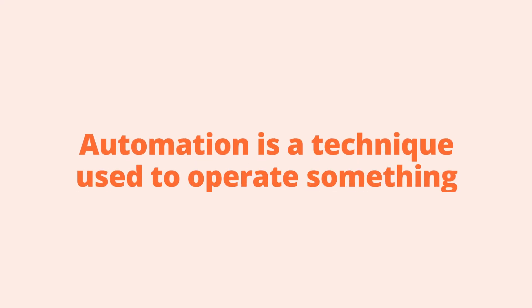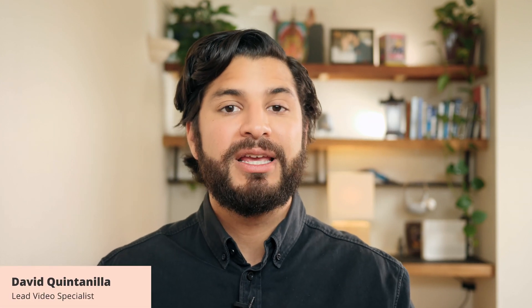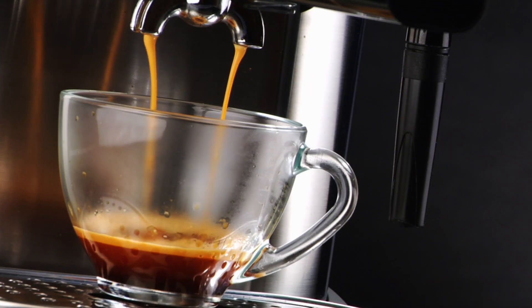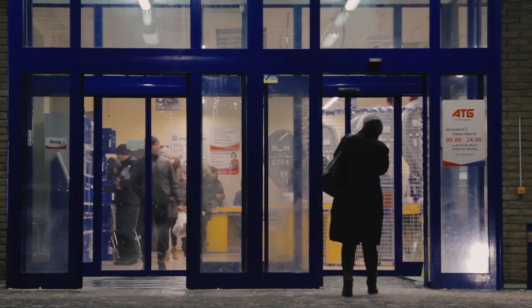To recap, automation is a technique used to operate something automatically, and at the heart of every automation is a simple command: when this happens, do that. Automation is everywhere in our daily life, from our coffee maker that brews the perfect cup every time to the sliding glass doors at the grocery store. Automation is also in the technology we use, from the preset reminders on our phones to the exact time that our laptop falls asleep.